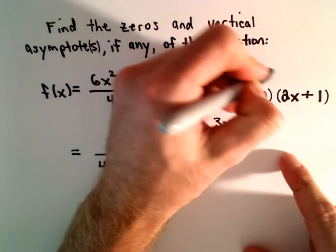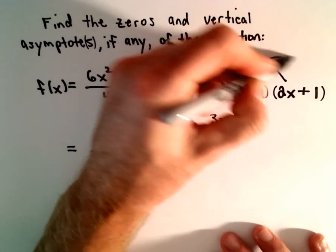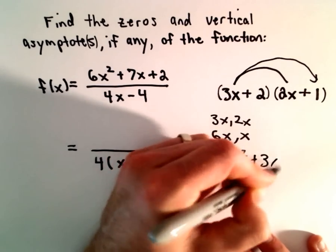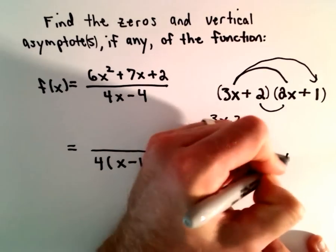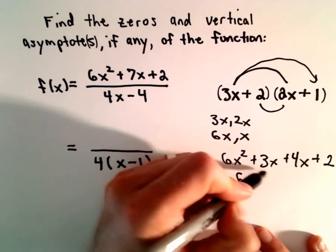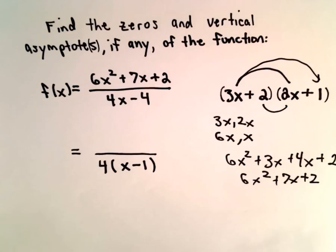If we distribute, we'll get 3 and 2, which will give us 6x². 3x times positive 1, we'll get a positive 3x. 2 times 2x is 4x, 2 times 1 is 2. That's going to give us 6x² + 7x + 2, and that's what we started with.